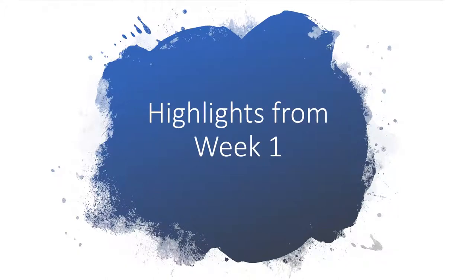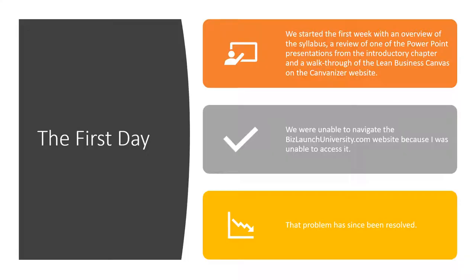Let's talk about highlights from last week, which was week one. We started with an overview of the syllabus, a review of the PowerPoint from the introductory chapter, and a walkthrough of the lean business canvas on the Canvanizer website. I sent you a sample of that work for demonstration purposes only. Unfortunately we weren't able to navigate bizlaunchuniversity.com because I was unable to access it, but those problems have now been resolved. Please go to bizlaunchuniversity.com, create an account, and start doing the lessons and homework.